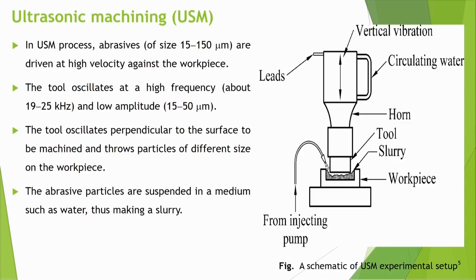Ultrasonic machining: vertical ultrasonic vibrations are imparted through leads and a horn which amplifies the vibrations, then to a tool. The tool vibrates and imparts motion to an array of abrasive particles in water — creating a cavity that is a replica of the tool shape. Abrasive particles of size generally 15 to 150 micrometers are driven at high velocity against the workpiece. The tool oscillates at a high frequency in the range of 19 to 25 kilohertz, with amplitude of about 15 to 50 micrometers.